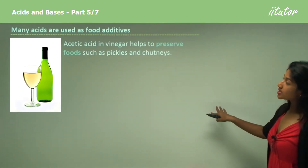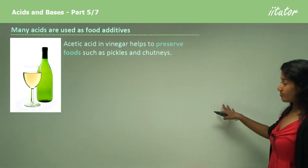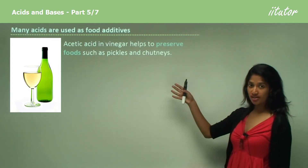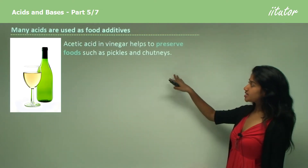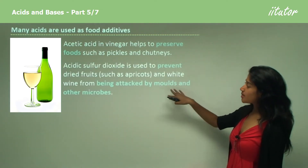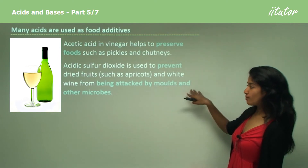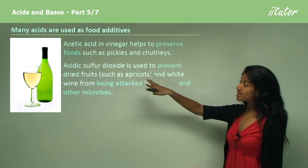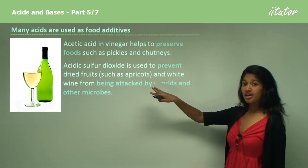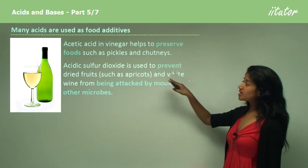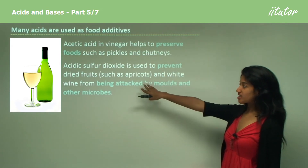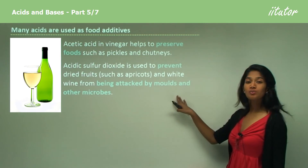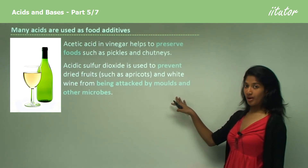Acetic acid in vinegar helps to preserve foods such as pickles and chutney. It is this ability to prevent attack from moulds and microbes that makes it effective. Sulfur dioxide, which is an acidic gas, can be gassed onto dried fruits such as apricots to prevent the growth of microbes.